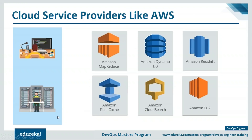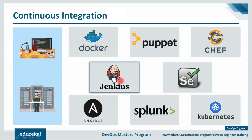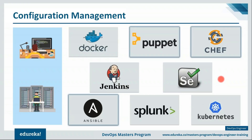DevOps engineers should also have good hands-on knowledge of automation testing tools like Selenium. Knowledge of continuous integration tools like Jenkins is also very important. They should also have expertise with automated delivery tools like Puppet, Chef, and Ansible.